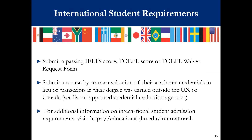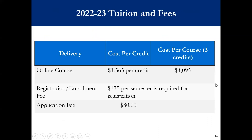There are a few additional steps for international students: you must submit a TOEFL or IELTS score, and if your degree was completed outside of the U.S., you'll need to complete a course-by-course evaluation. Additional information can be found on our school's website. The tuition for the 2022–2023 academic year for the MS in Education Policy Program is $1,365 per credit. The registration fee is $175 per semester, and the application fee is $80.